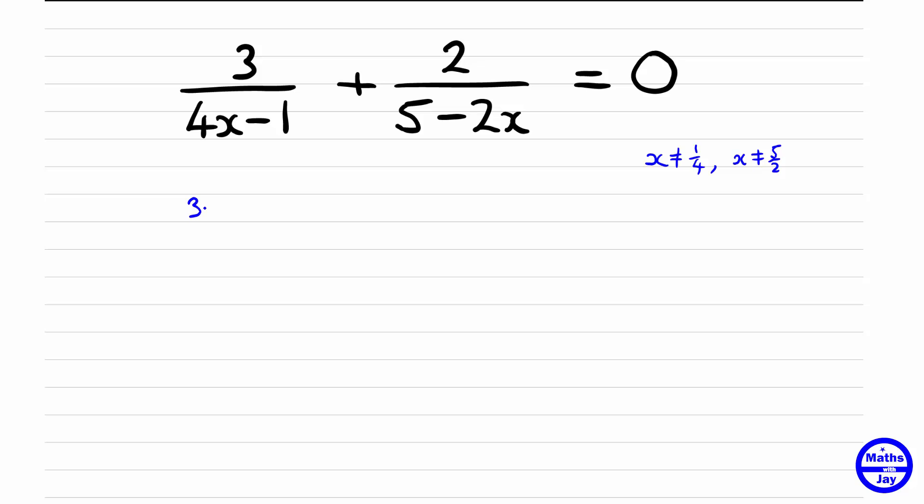So that means in the first fraction, if we write it out in full, which you won't need to do once you've got used to this sort of thing, we'd have that multiplied by 4x minus 1. And then the second equation we'll get 2 times 4x minus 1 over 5 minus 2x, and we multiply the right-hand side by 4x minus 1, but it's just zero so that's just zero. But if you had a number there then you'd have to multiply that by the 4x minus 1. And now we can cancel the 4x minus 1's in that first fraction.